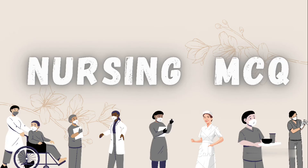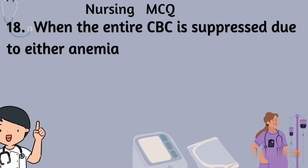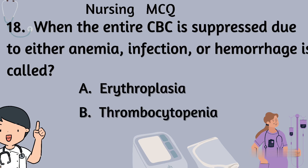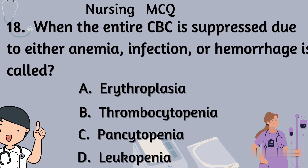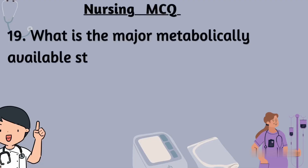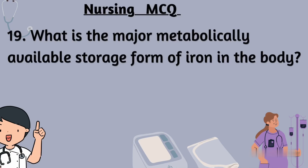Question number 18: When the entire CBC is suppressed due to either anemia, infection, or hemorrhage, it is called — Option A: erythroplasia, Option B: thrombocytopenia, Option C: pancytopenia, Option D: leukopenia. The right answer is Option C: pancytopenia.